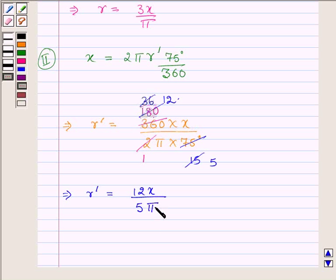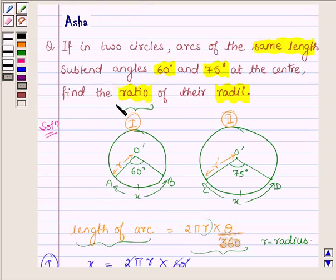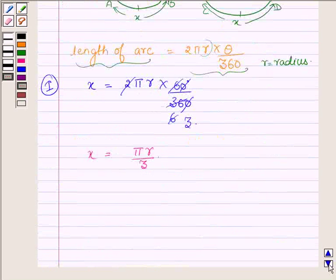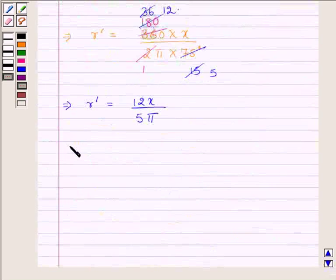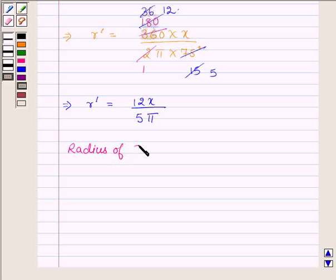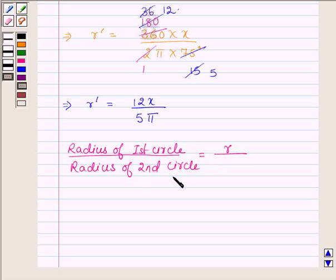Now according to the question, we have to find the ratio of their radius. So what we will do is divide the radius of first circle upon radius of second circle. This is what we have to find. And R is equal to 3x upon pi.